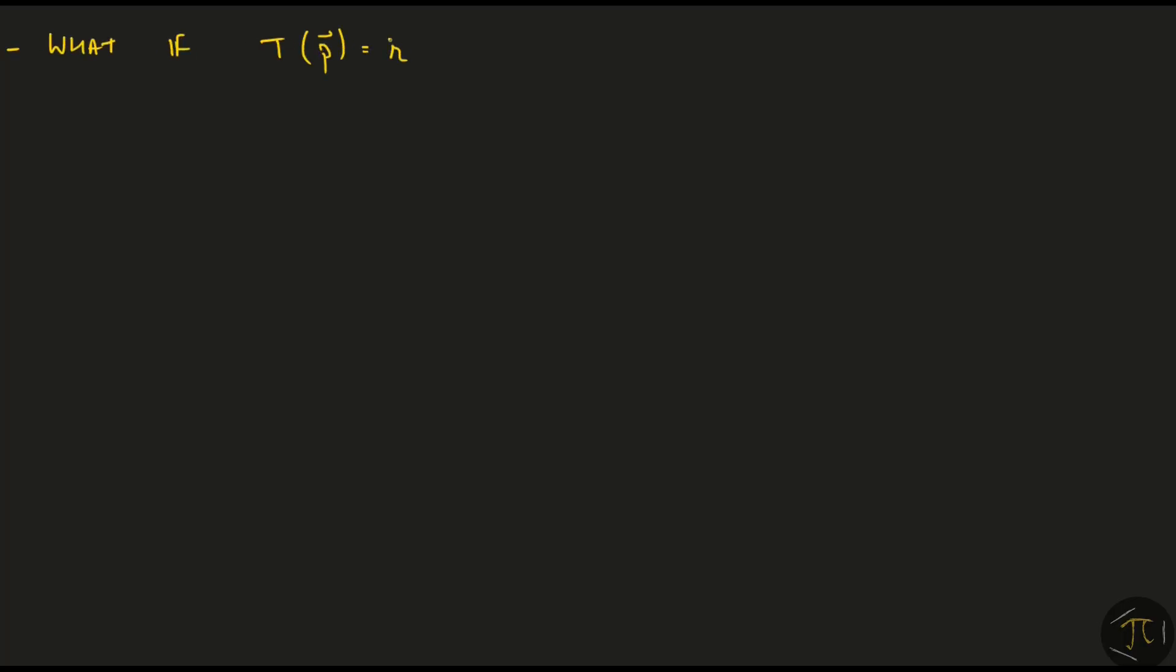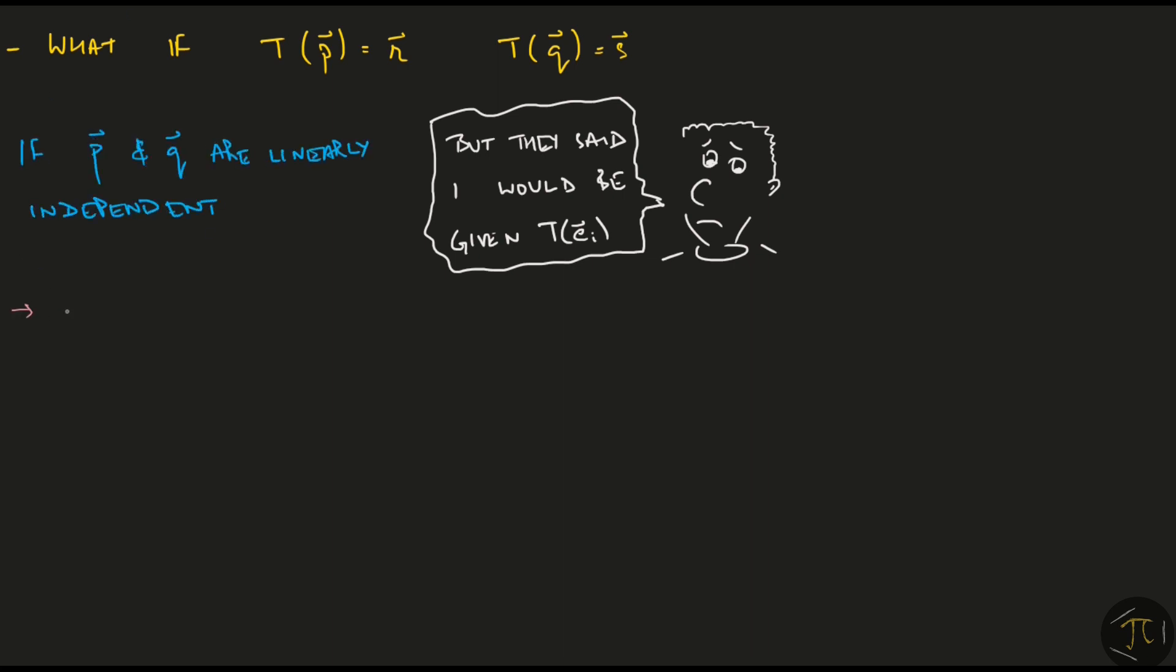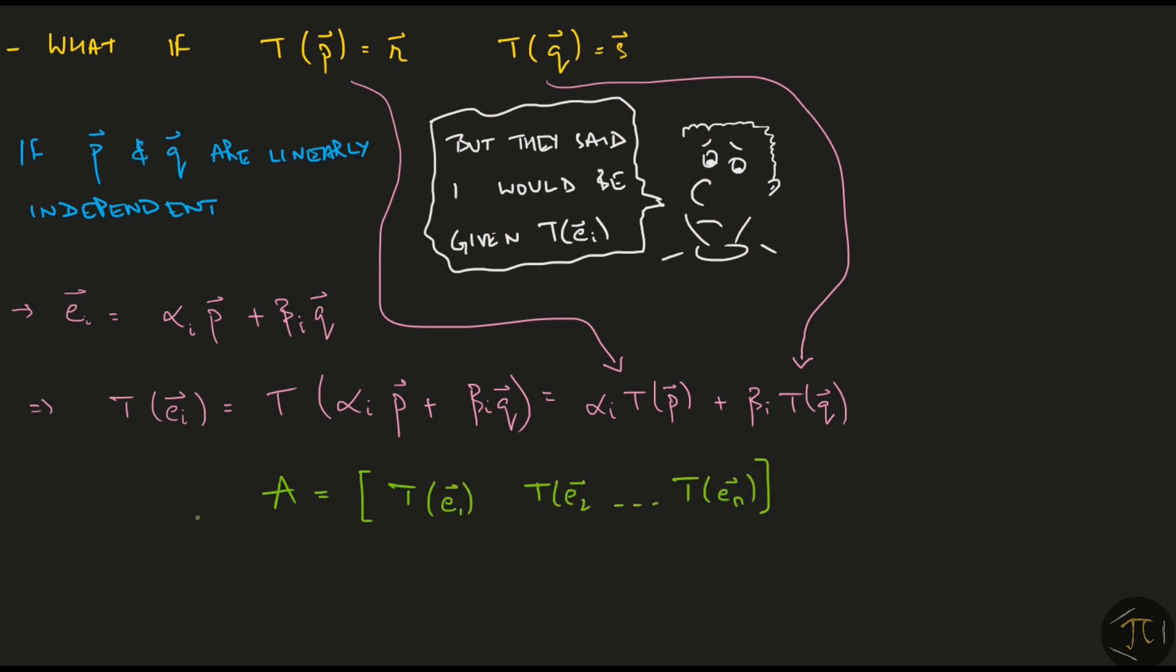But what if I am told the transformation of some other vectors instead of the transformation of the standard bases vectors and then asked to find the associated matrix? Well, if the given vectors are linearly independent, we can write each bases vector as a linear combination of the given vectors. Then finding the transformation of each bases vector is easy using the linearity principle. And then using these transformations as the column vectors, we can write the associated matrix.